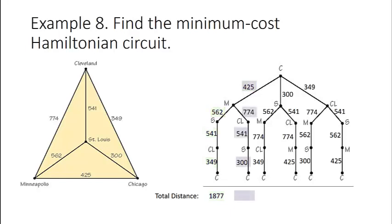Next from Chicago to Minneapolis to Cleveland to St. Louis to Chicago. Adding we get a distance of 2040. We continue this for each one of the branches of our tree, for each possible route.